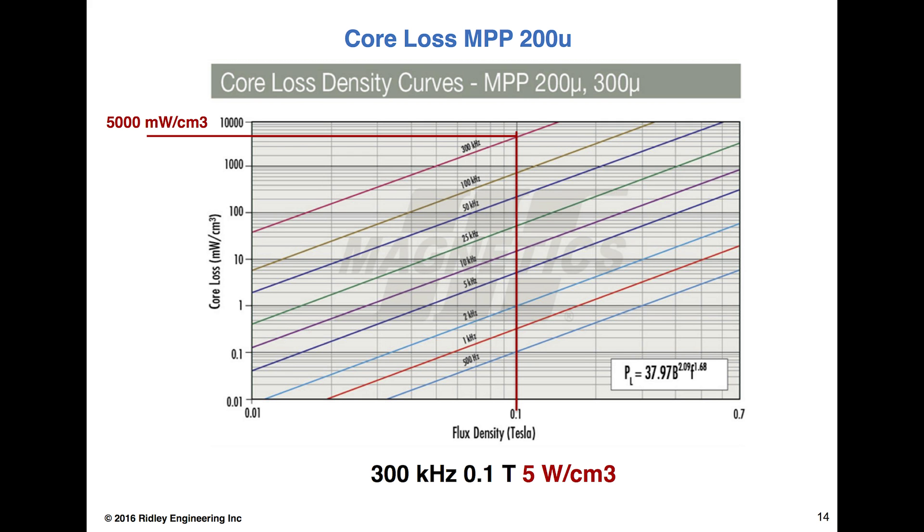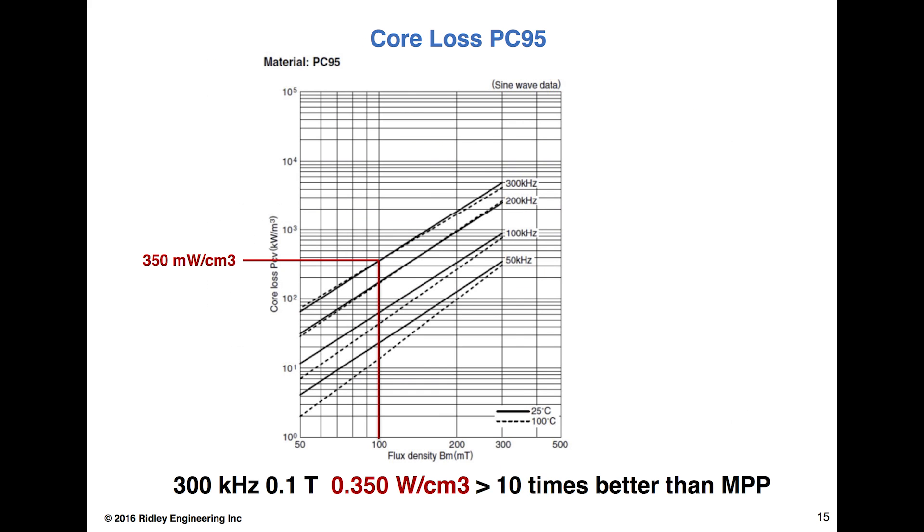To get the core losses down, notice if you look to the left of the curve, these things fall off very rapidly. If I was only exciting at 10 milliTesla, then I'd only have about 40 milliwatts per centimeter cubed. So things change rapidly as we try to push the cores harder.